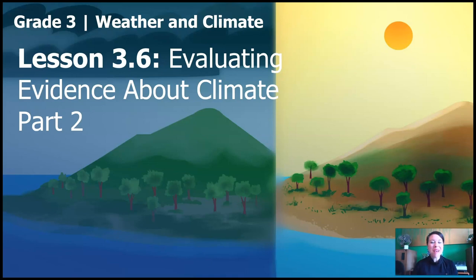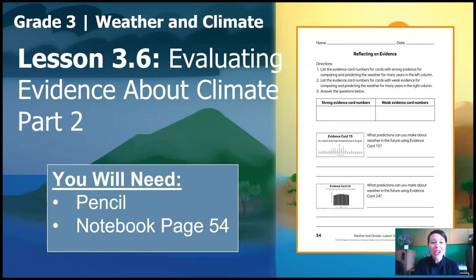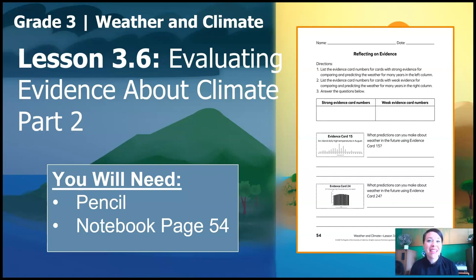Hi, welcome back. I'm Scientist Kate. This is Grade 3, Weather and Climate, Lesson 3.6, Evaluating Evidence About Climate, Part 2. For this lesson, you will need a pencil or something else to write with and notebook page 54. I'm so excited because I'm hoping today we're going to get to decide which island the orangutan reserve should be on. Are you ready to do some science? Let's go!